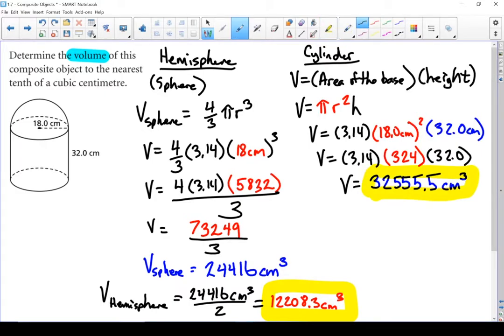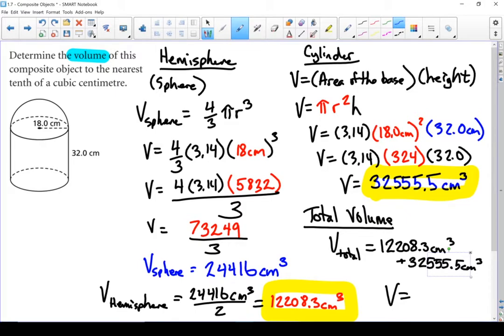And the total volume of that cylinder is 32,555.5 cubic centimeters. We'll finish that off by putting together a total volume. And all we're going to do is add those two numbers together. 12,208.3 plus 32,555.5. Our end answer is 44,763.8 centimeters cubed.